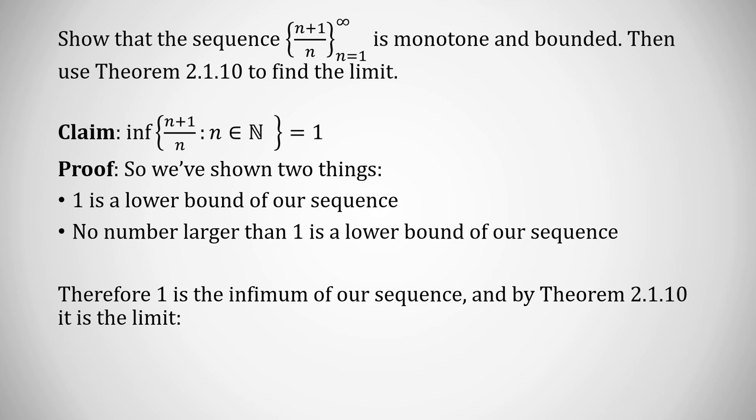Theorem 2.1.10 tells us that for a bounded monotone decreasing sequence, the infimum equals the limit. Therefore, the limit as n goes to infinity of (n+1)/n equals 1, and the proof is complete.